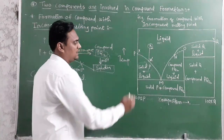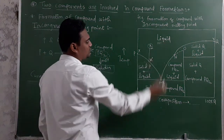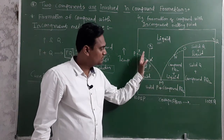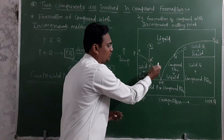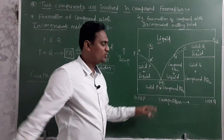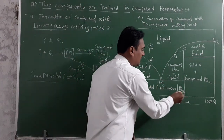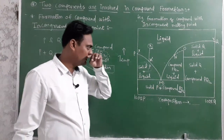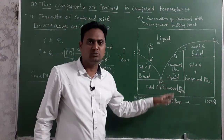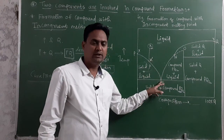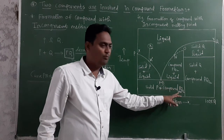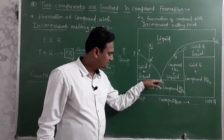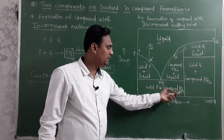Along the fusion curve, solid P and liquid are in equilibrium. If the process of cooling is continued up to point M, at point M the compound PQ2 starts to separate out — a new compound forms and begins to solidify. Below point M, we have both solid P and compound PQ2 present.